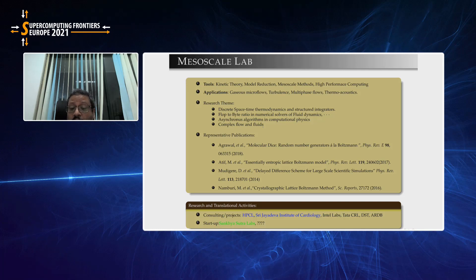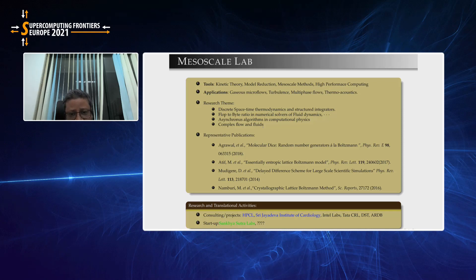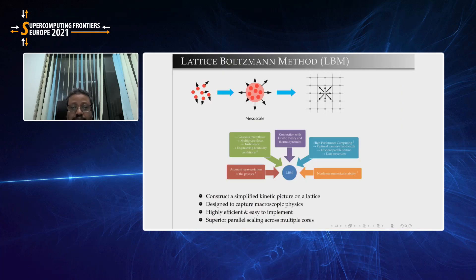The way we tackle this is to optimize the code, because memory bandwidth as well as flops become an issue — largely the memory bandwidth. We look at the problem from three sides: one is the physics, looking at algorithmic improvements coming from the fluid dynamics side; then mathematical optimizations; and finally hardcore computer optimization from the bandwidth perspective.